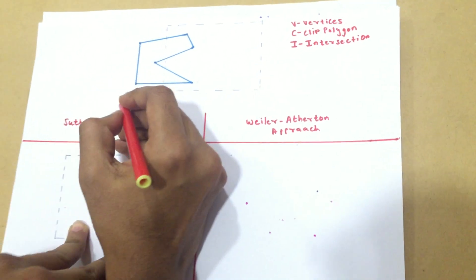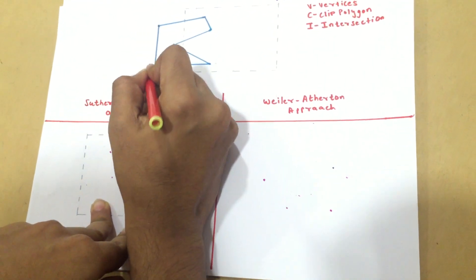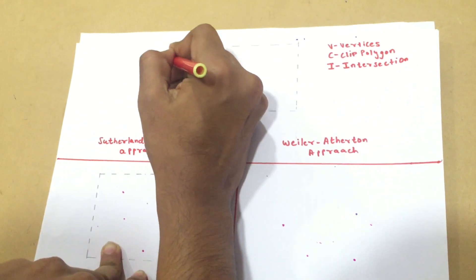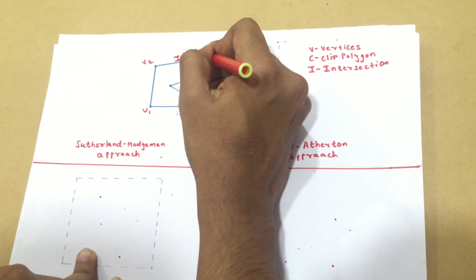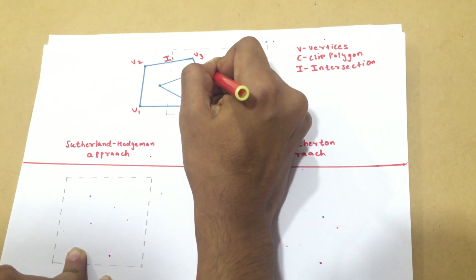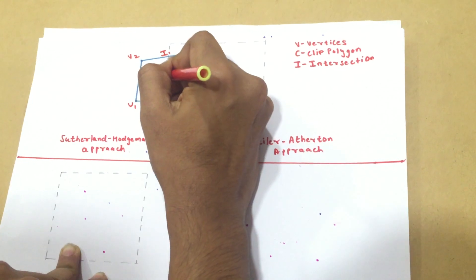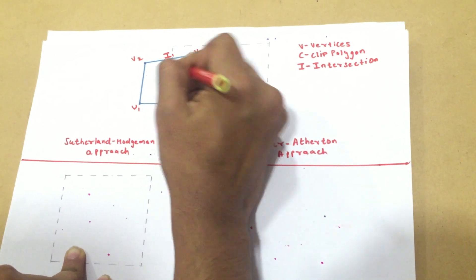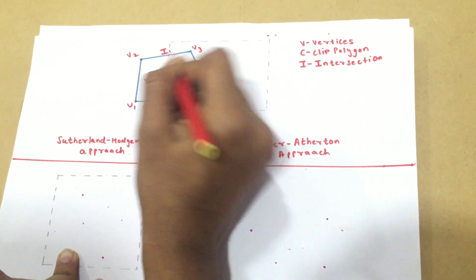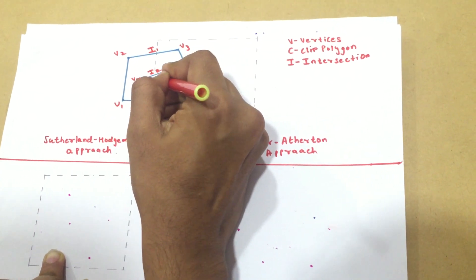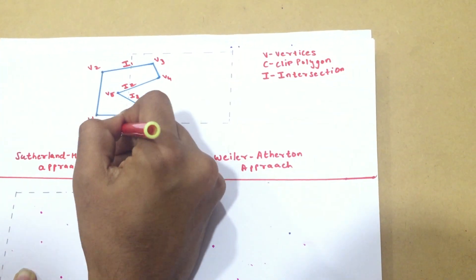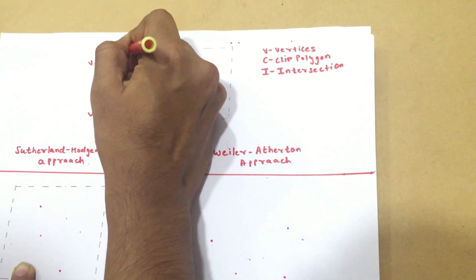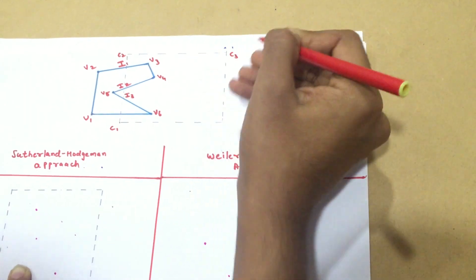Let's name it first. This will be V1, V2. This is an intersection, so I2, then V5. This is an intersection, so I3, then V6. My clip polygon is C1, C2, C3, and C4.